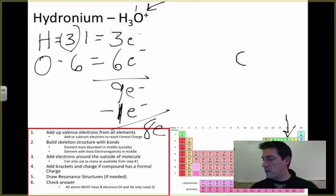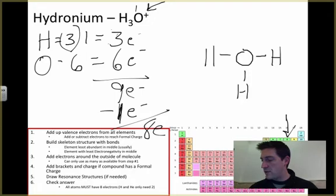I put my oxygen in the center, and then I start putting my hydrogens around the outside edge. I've got a hydrogen, hydrogen, hydrogen - so I've used up all three of my hydrogens. So I've built my skeleton structure.